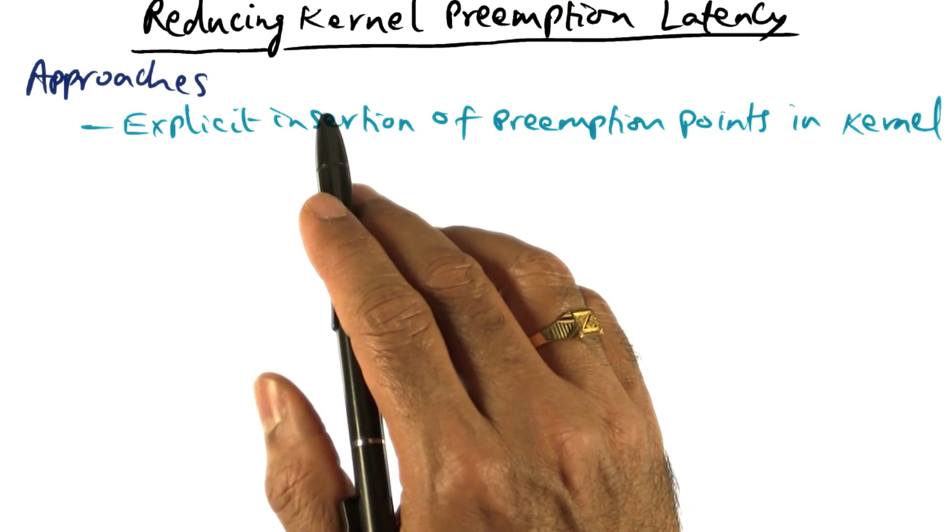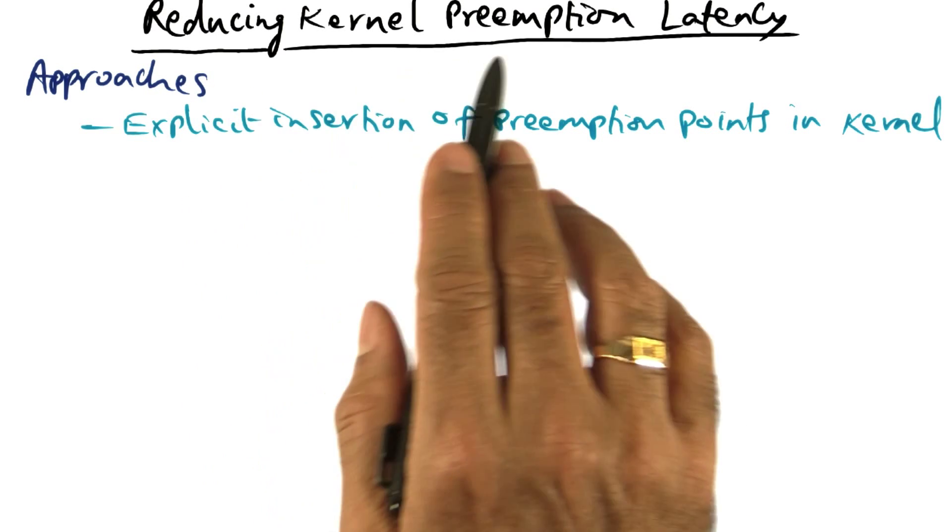The second source of latency, as I mentioned, is the kernel preemption latency.